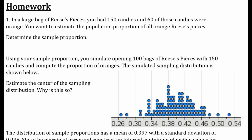What's my sample proportion? My p-hat is I had 60 orange out of 150 candies, which if you simplify that down becomes 6/15ths, which is 2/5ths, which is 40%. If you type that in a calculator, you'll get 0.4 or 40%.